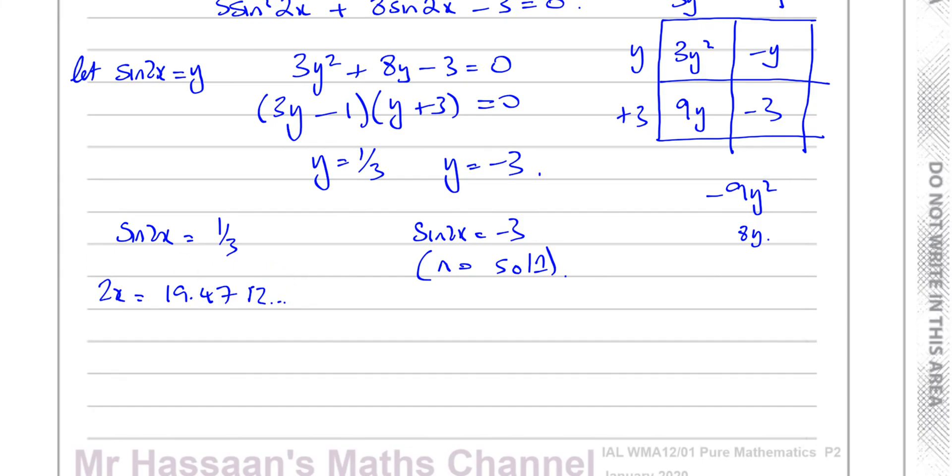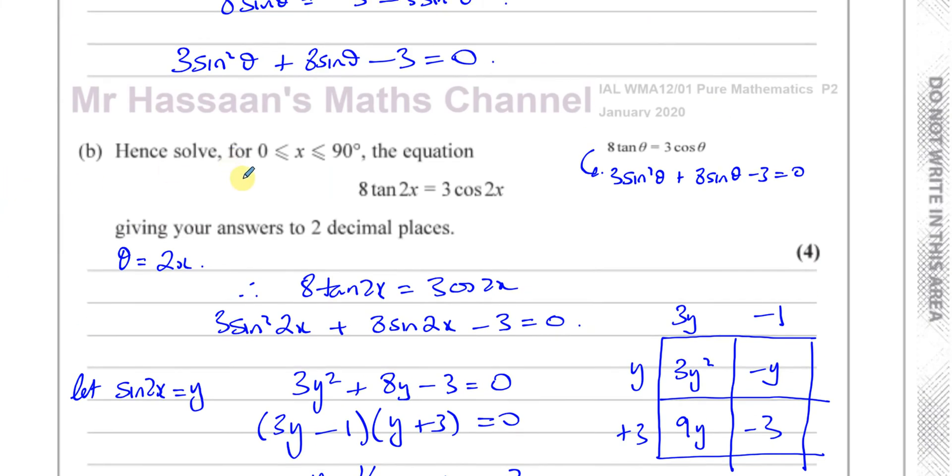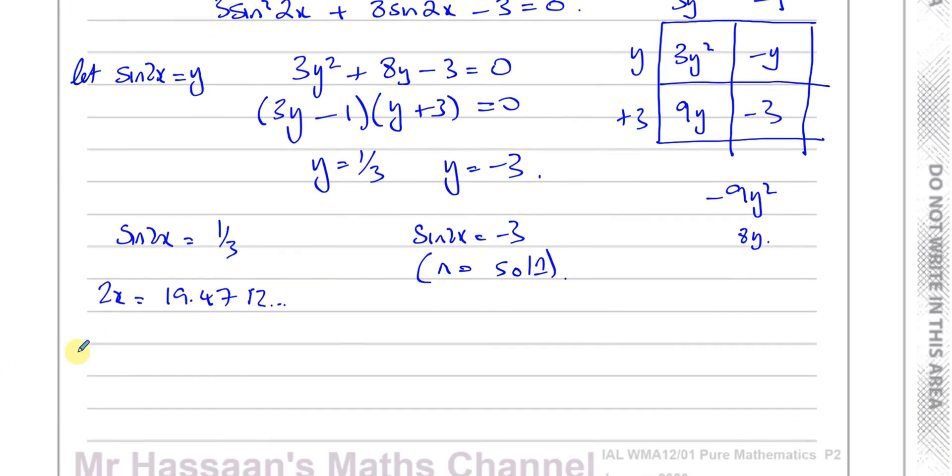Now the other thing we should have done before I actually started this was check the limits. The limits are between 0 and 90 for x. Now what we have here is 2x. Now if we just leave our limits between 0 and 90 and we stop there, we're going to lose some solutions. So what we have to do is we have to modify the limit to make it say the same thing as what the angle is. So we multiply everything by 2 in the limit. So this is going to be 0 to 180.